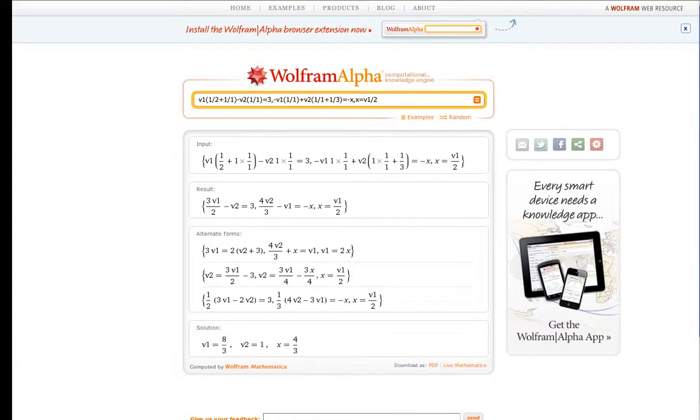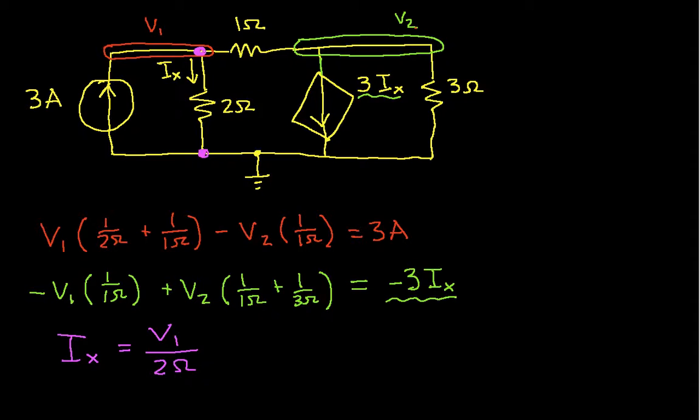So what this tells us then is that V1 is 8 thirds volts, V2 is 1 volt, and IX is 4 thirds amps. So we can go back to our circuit. And we have then that V1 is 8 thirds, so that's 2.667 volts. V2 is 1 volt. And IX, the current that is controlling my source is 4 thirds, which is 1.33 amps, which makes sense given what V1 is.